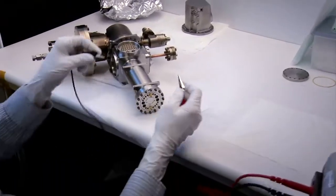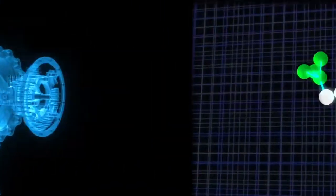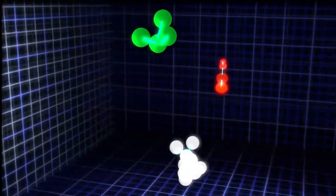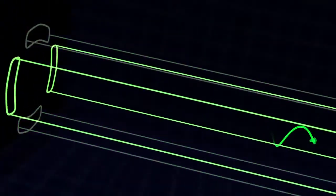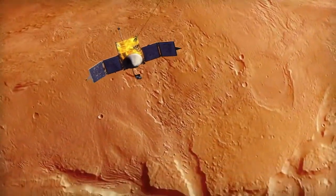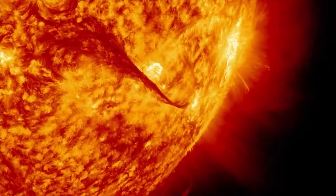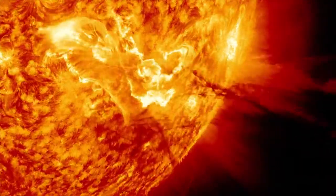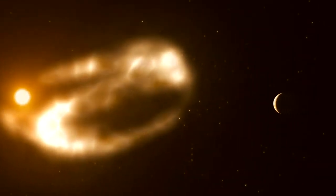The NGIMS experiment on MAVEN is the Neutral Gas and Ion Mass Spectrometer. This experiment is a quadrupole mass spectrometer with two ion sources designed to look at both neutral gases and ions in the upper atmosphere of Mars. As we dip down into the atmosphere, we'll measure the altitude variation of those chemical constituents. We'll look for the composition and how that composition changes with solar events like big solar flares and solar activity. We'll do that for a whole Earth year on many, many orbits around Mars.